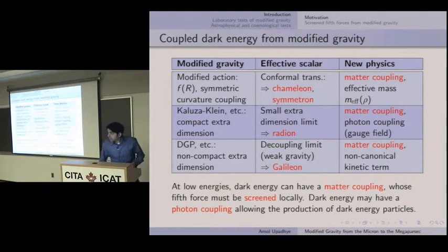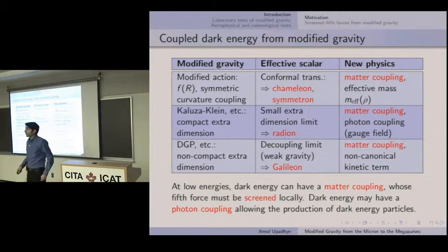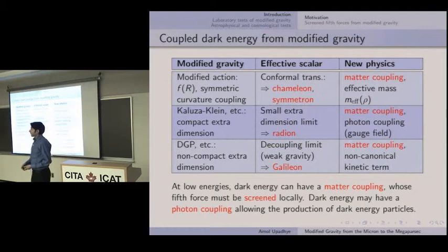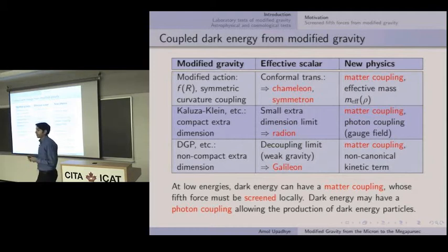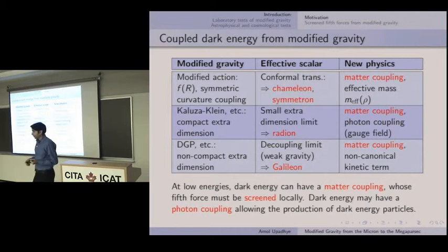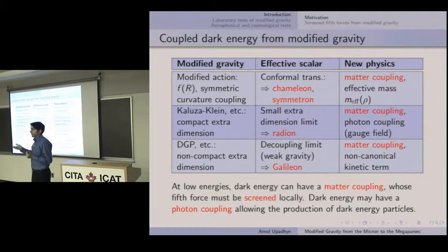It's not just the couplings that matter — it's also the mass of the field. For chameleons, the screening works by acquiring a large mass, so the fifth force is short-range. Galileons have no mass and use another mechanism. You could also just turn up the mass to well above standard model scales.